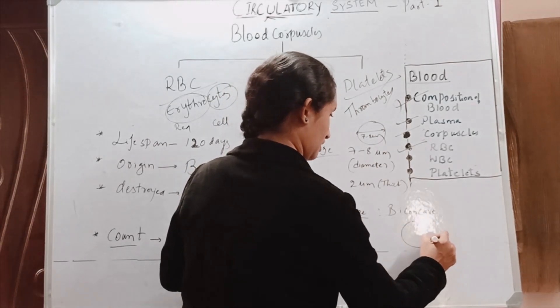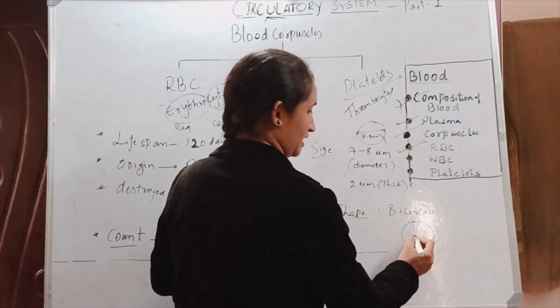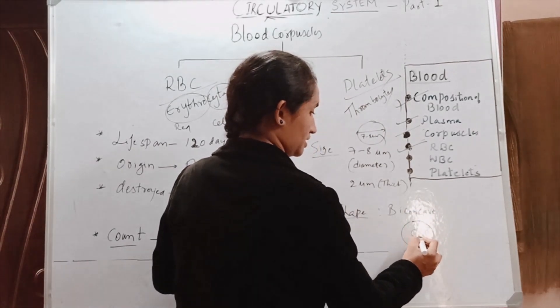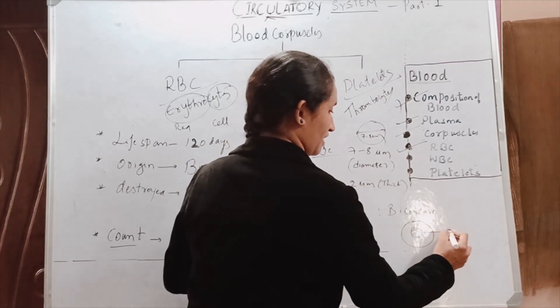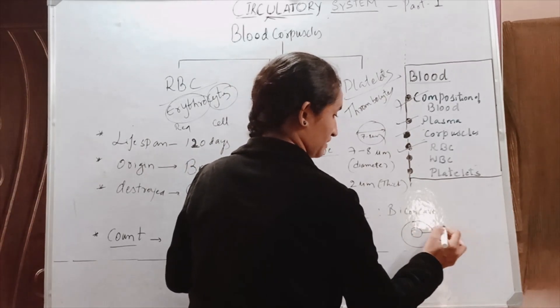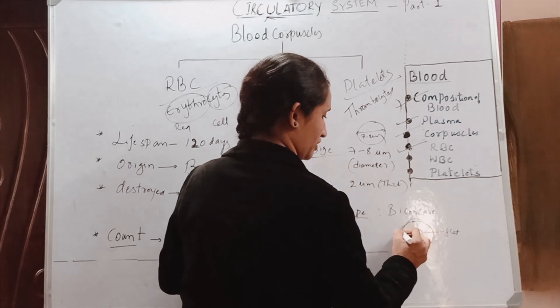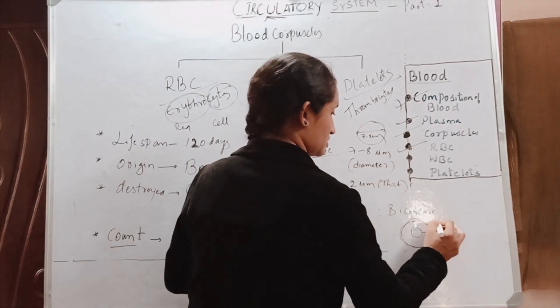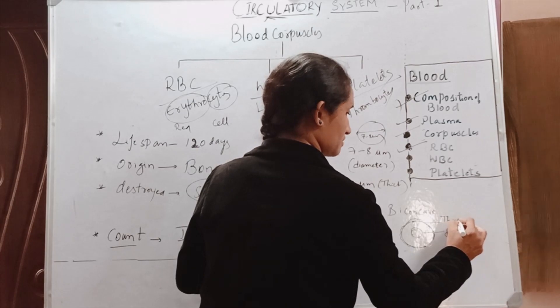Biconcave in the sense... suppose this is a cell. You can see that the center part will be flat, and the periphery part, what you can see is the periphery part at the edges, so this will be thickened.